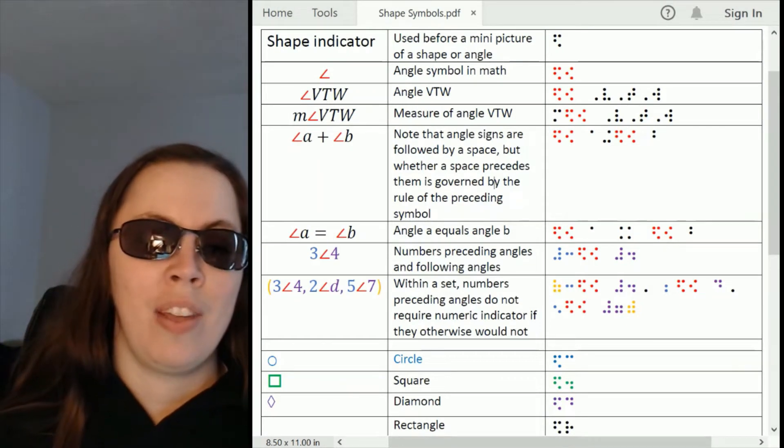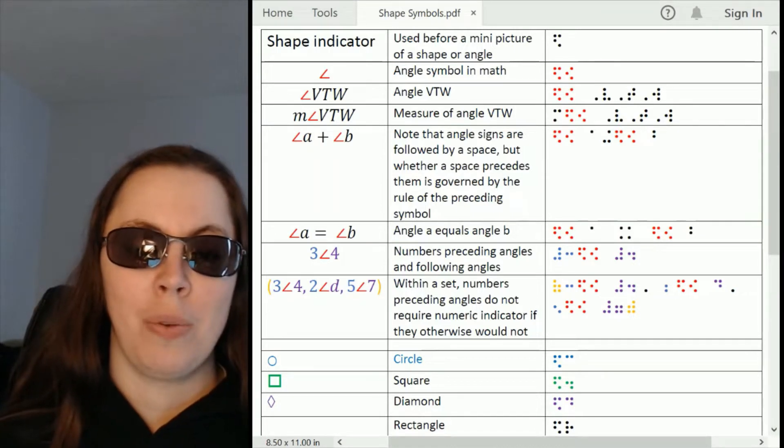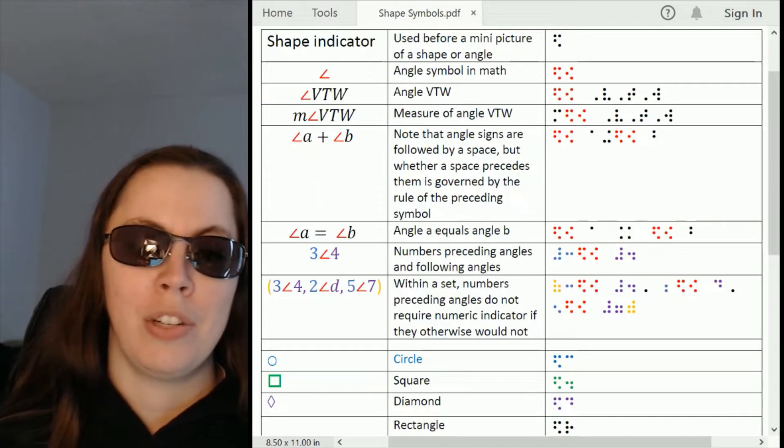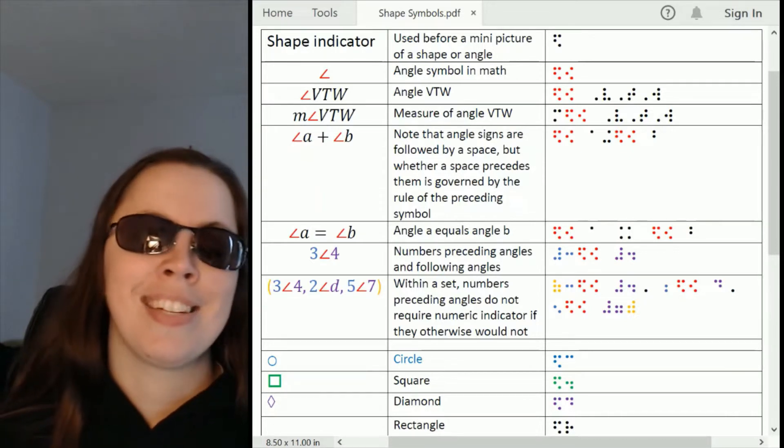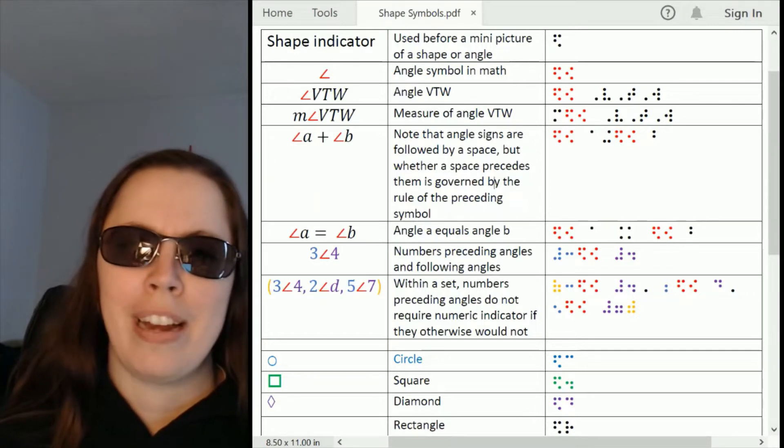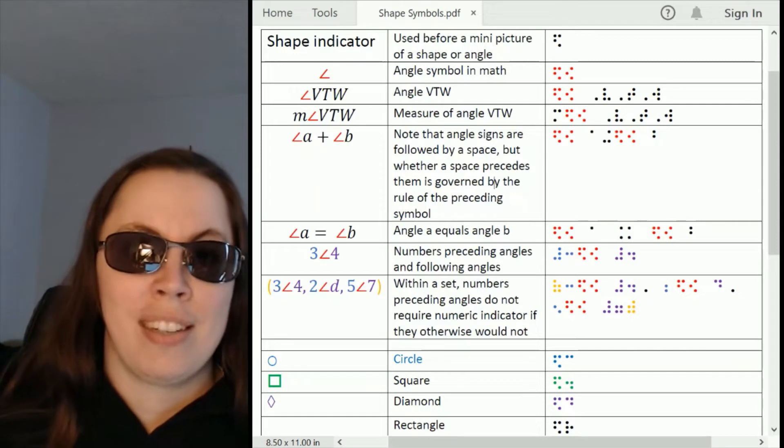In that we've got the ability to make angles. The angle symbol in math is dots 1246 followed by a left pointing shape, so dot 246. This is the reason why we don't have a shorthand for a left arrow. Other than right arrow being used more often, it is that this symbol is used for something else in braille, the angle symbol.